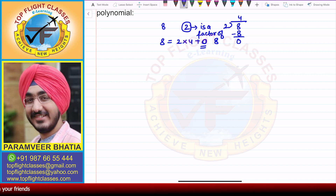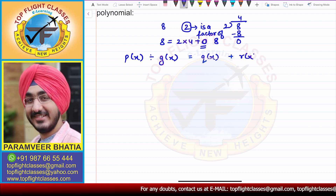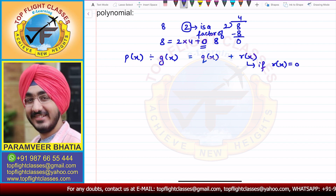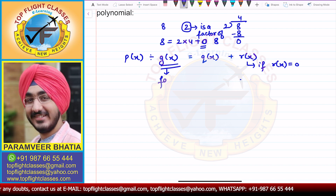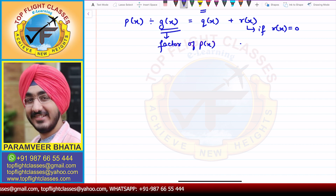In this question, we have p(x) and g(x). If the remainder is equal to 0, then g(x) will become a factor of p(x). This is what we have to do in this particular question.